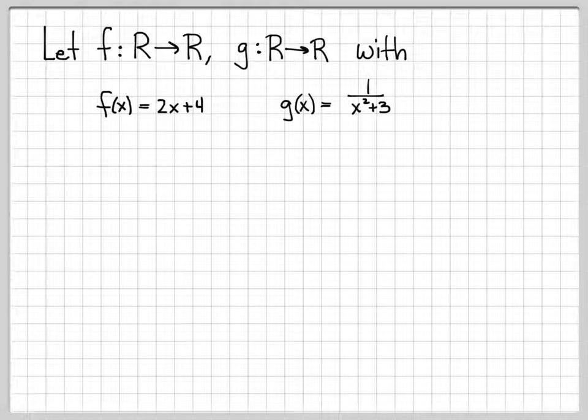So one thing we can ask ourselves is, are these really functions from R to R? And one way to usually find something that violates this is to find a point where things mess up. But we don't have any problems here. f of x is just a line. So it's a very well-behaved, well-defined function.